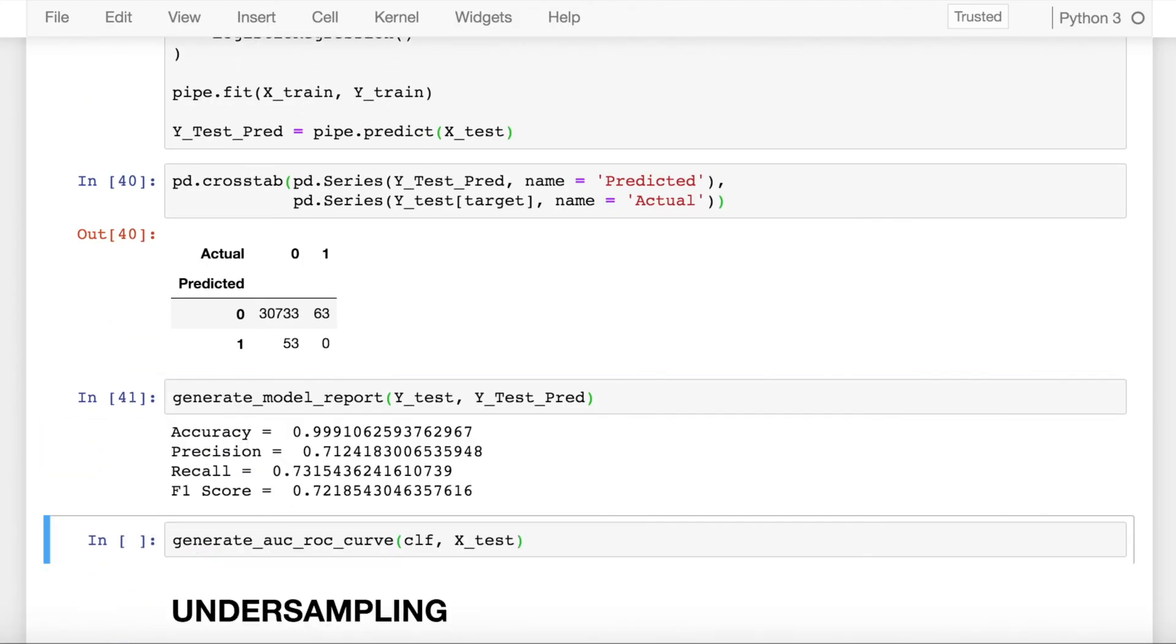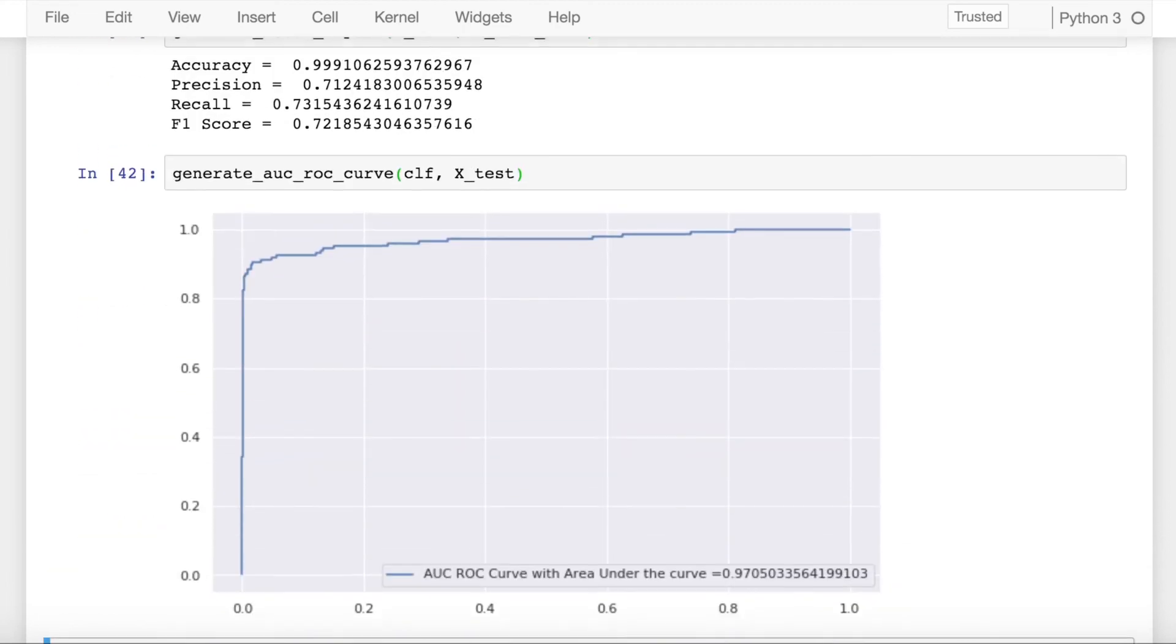Now when I generate the model report, it's a highly accurate model as expected and the AUC ROC values are also very high. So this was my take on how you can use SMOTE effectively for oversampling your data.